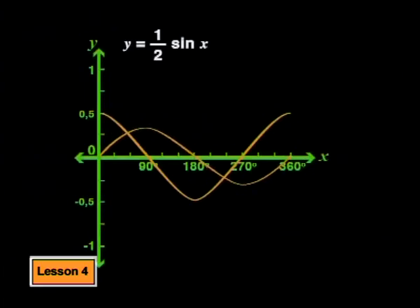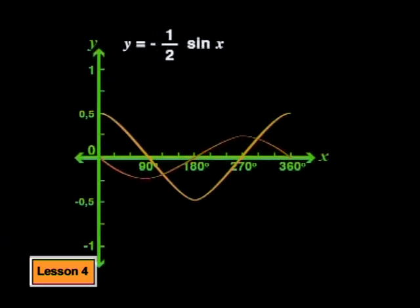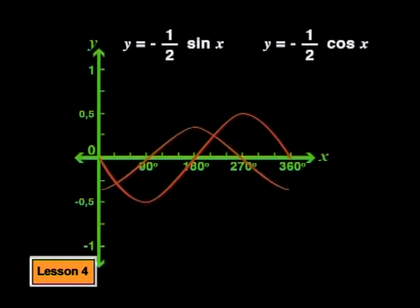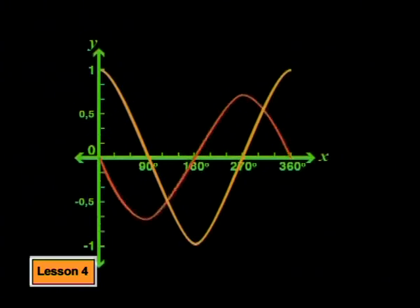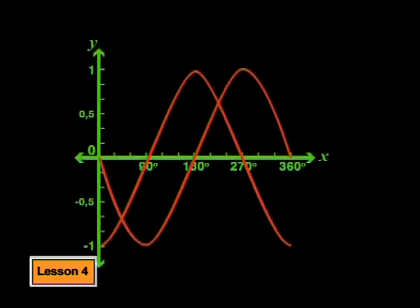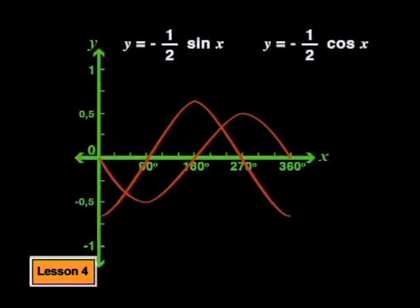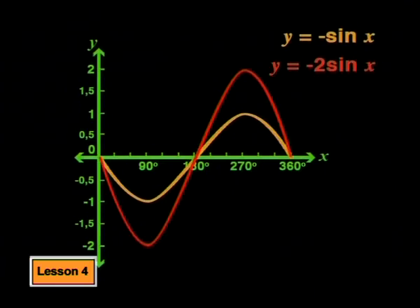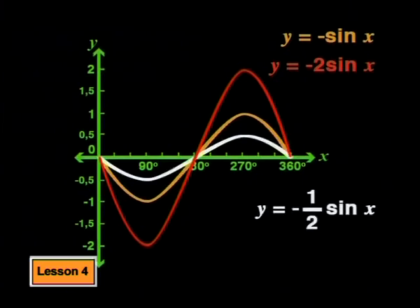These graphs will be the reflections of the graphs for y equals one-half·sine(x) and y equals one-half·cosine(x). Or you could describe them by using the reflection of the parent graph and multiplying by a factor of one half. Have a look at the three negative sine graphs we've worked with: y equals negative·sine(x), y equals negative 2·sine(x), and y equals negative one-half·sine(x).